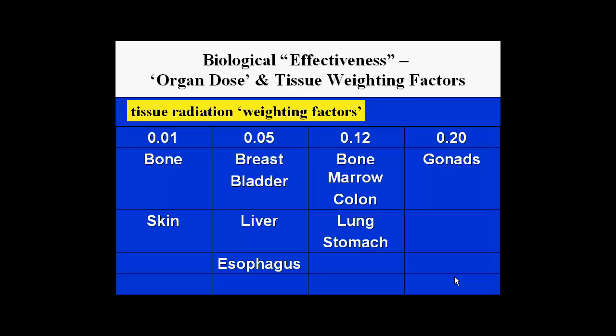Biological effectiveness is another important parameter. Each individual organ exposed has a somewhat different sensitivity to radiation with respect to the risk of producing cancers. Bone and skin have the lowest biological effectiveness at 0.01. Breast, bladder, liver, and esophagus fall at 0.05. Bone marrow, colon, lung, and stomach are much more radiation sensitive, and the most important organs are the gonads.